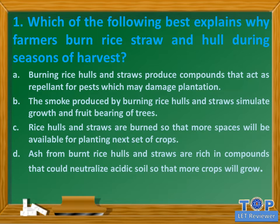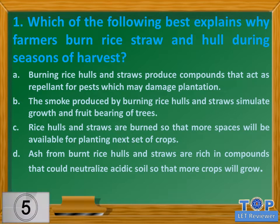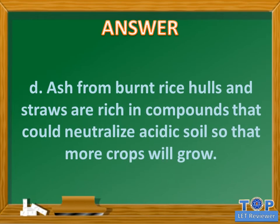Which of the following best explains why farmers burn rice straw and hull during seasons of harvest? A. Burning rice hulls and straws produce compounds that act as repellent for pests which may damage plantation. B. The smoke produced by burning rice hulls and straws simulate growth and fruit bearing of trees. C. Rice hulls and straws are burned so that more spaces will be available for planting next set of crops. D. Ash from burnt rice hulls and straws are rich in compounds that could neutralize acidic soil so that more crops will grow. Answer: D.